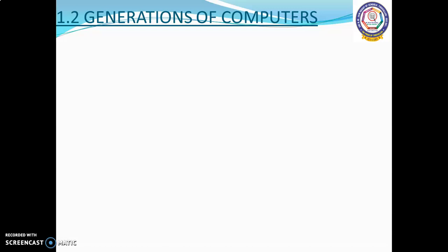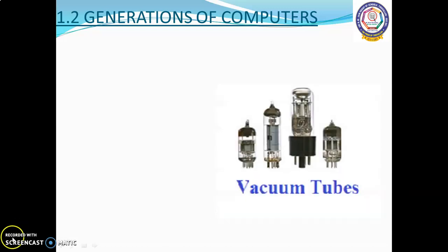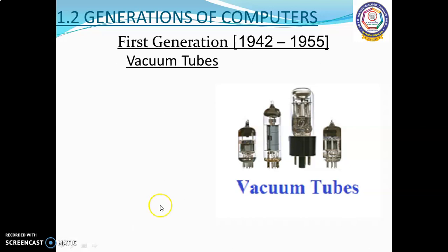Now we are going to learn about generations of computers. Based on various stages of development, computers can be categorized into different generations. The first generation is from 1942 to 1955 and used vacuum tubes.